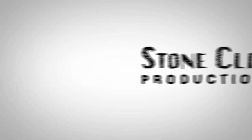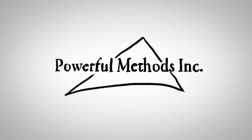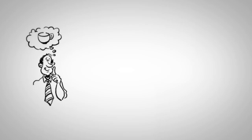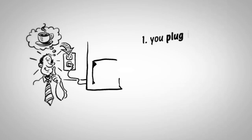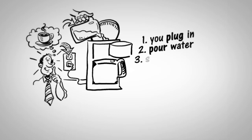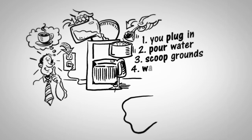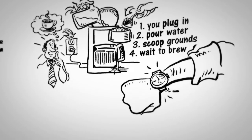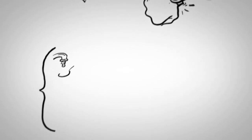Stonecliff Productions presents a Powerful Methods production: Systems Thinking, a way to optimize everything that you do. What is systems thinking? Say you want to make a cup of coffee. You plug in your coffee maker, pour the water into the reservoir, scoop the coffee into the filter, and wait for it to brew.